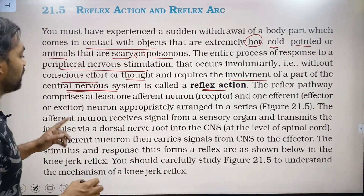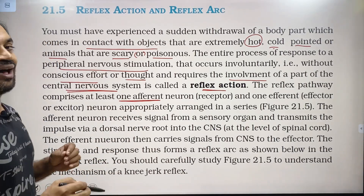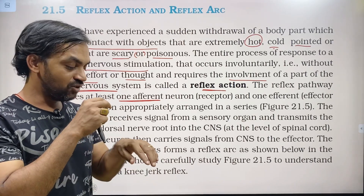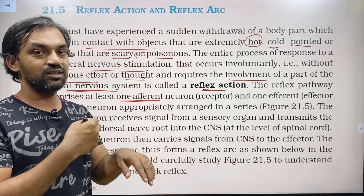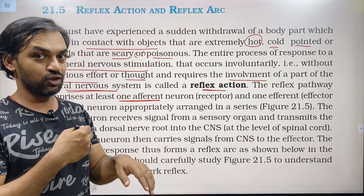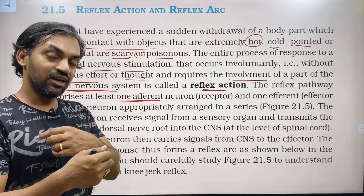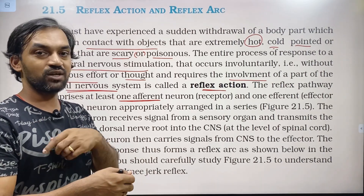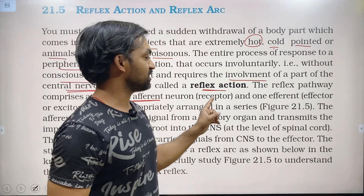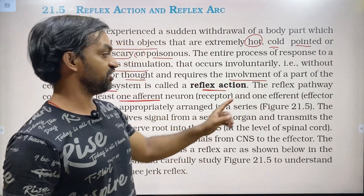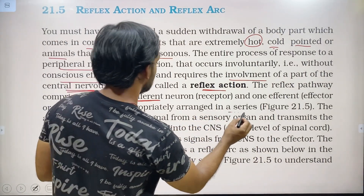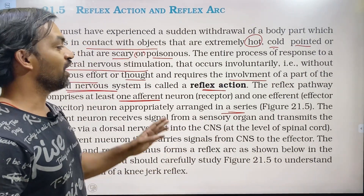The reflex pathway comprises at least one afferent neuron. The afferent neuron carries the stimulus signal to the central nervous system. The central nervous system generates the response via the efferent neuron. So, at least one afferent neuron and one efferent — or effector — neuron are appropriately arranged in a series.